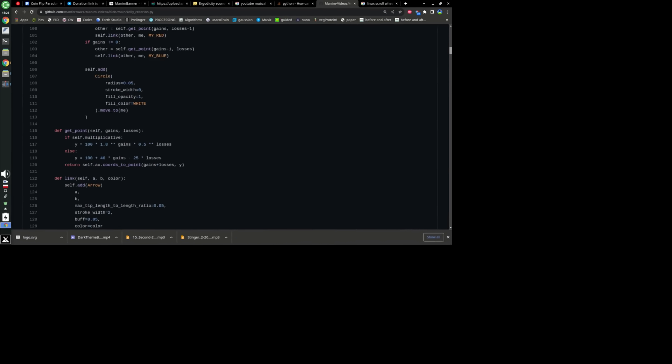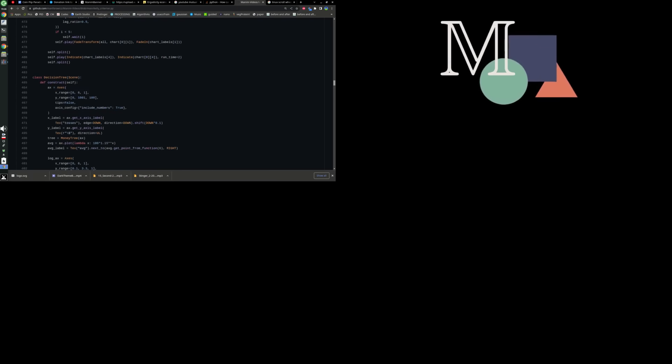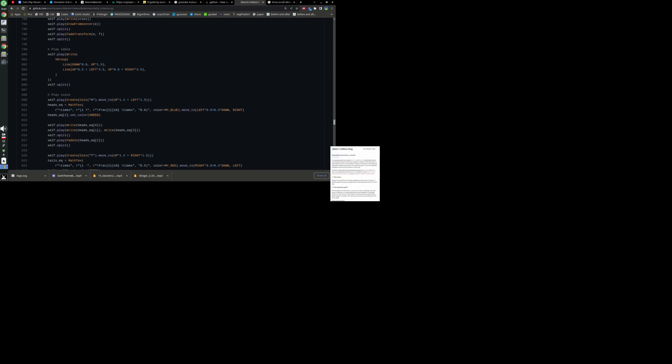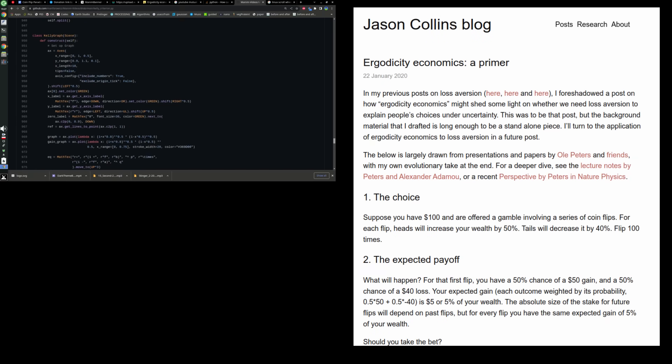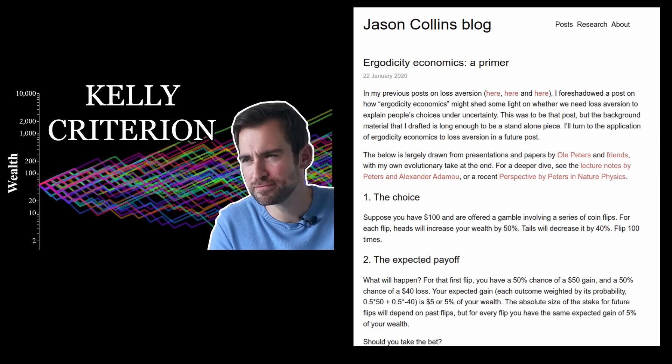I only had to write 1100 lines of code to animate this video, thanks to the superb Manim Graphics Library created by 3Blue1Brown and the community. I'd also like to thank Jason Collins for his informative blog post on Ergodicity Economics. Also, check out the channel Mutual Information for another great explanation of the Kelly Criterion. And thanks for watching.